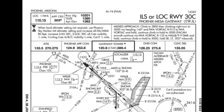The rest of the briefing strip has all the frequencies: ATIS 133.5, Phoenix Approach Control 124.9, Gateway Tower 120.6 or CTAF, Ground Control 128.25, and Clearance Delivery 135.05.